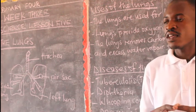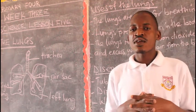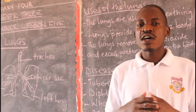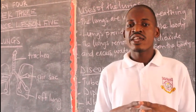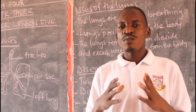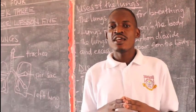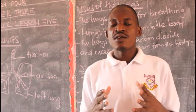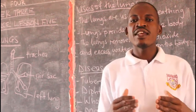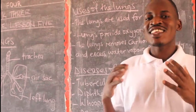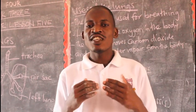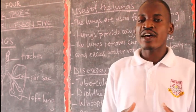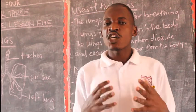Last time, we were looking at body organs — we looked at different body organs where we had the brain. We talked about the brain: that it is found in the head, protected by the skull. We looked at the importance of the brain, where we see that the brain is used for thinking, remembering, and to store information, and many other functions.